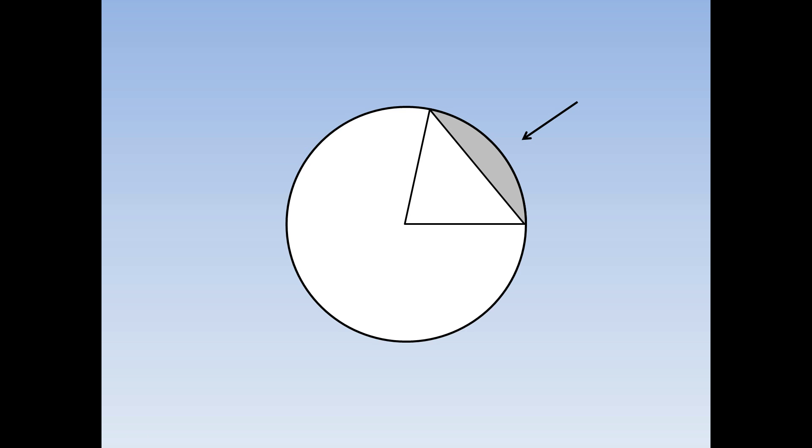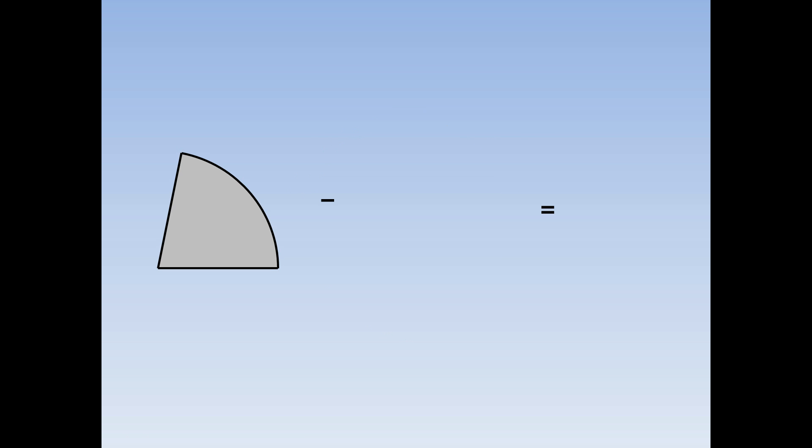To find the area of the segment, we need to work out the area of the sector, take away the area of the triangle, and this leaves us the area of the segment.